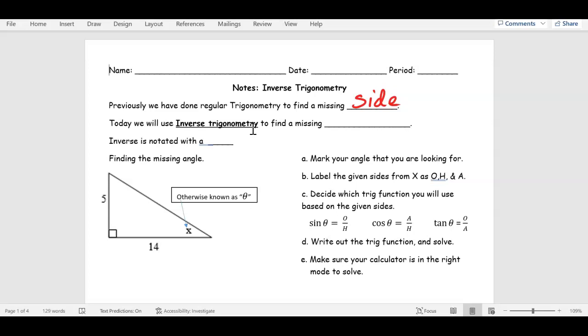previously, we have done regular standard trigonometry to find a missing side. Missing side. Today, we're going to use inverse trigonometry, going to underline inverse, to find a missing angle. By the way, angle is A-N-G-L-E, not E-L, not an angel, okay?